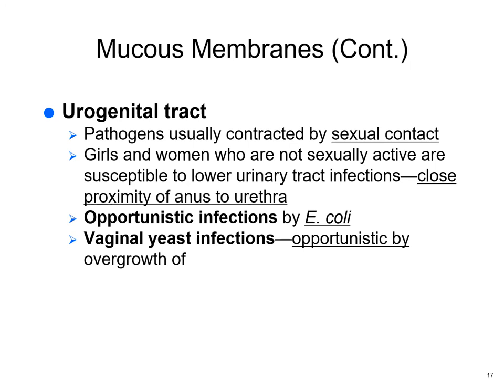The urogenital tract: many infections are contracted by sexual contact. The proximity of the anus to the urethra can make infection possible. Opportunistic infections of the urogenital tract from E. coli can occur if there's irritation at the urethral opening — it then goes up into the bladder. Vaginal yeast infections are an opportunistic overgrowth of Candida. When you take antibiotics and kill off bacteria, you commonly get a yeast infection. One woman said every time her doctor prescribed antibiotics, she asked them to also prescribe a pill for the yeast.